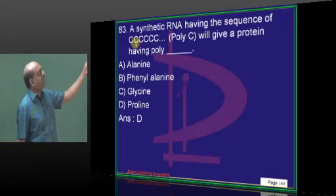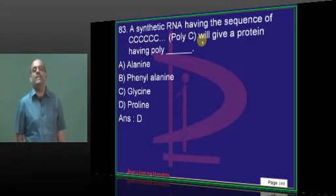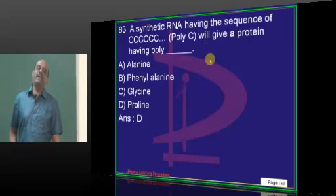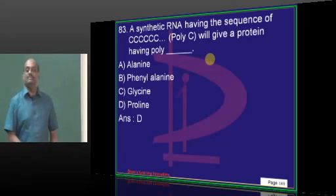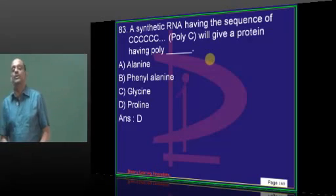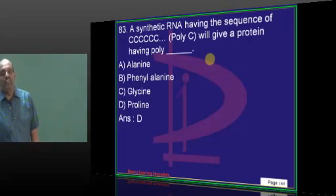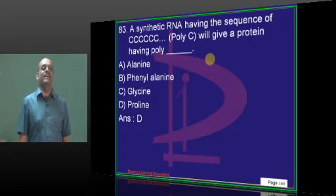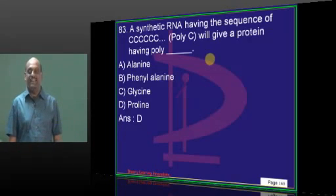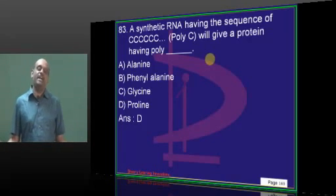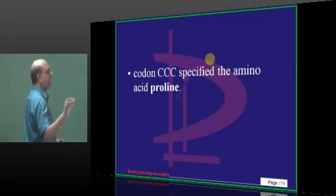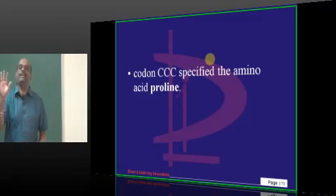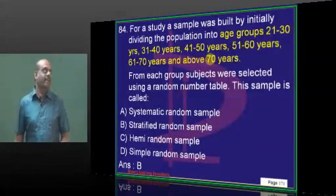Synthetic RNA having CCC — poly-C — what protein will it give? This is about who will remember what the codon and anticodon of the various amino acids are, unless it is the start codon or stop codon you can remember. CCC specifies for the amino acid proline — that is what you have to basically remember.